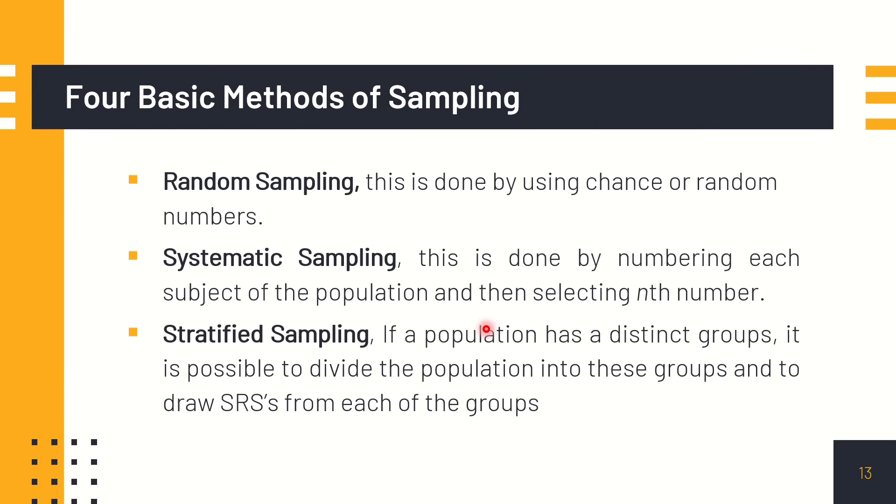Next is stratified sampling. If a population has distinct groups, it is possible to divide the population into these groups and to draw stratified random sampling from each of the groups. And lastly is the cluster sampling. This method uses intact groups called clusters. This is used when your research has a wide scope, so therefore, we are using cluster sampling.